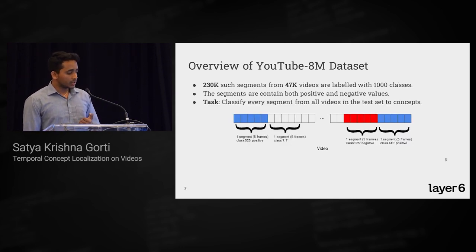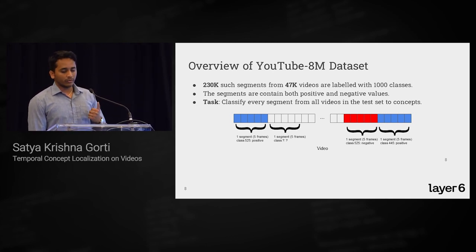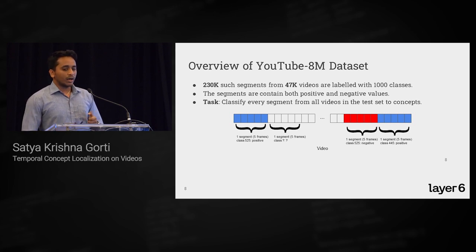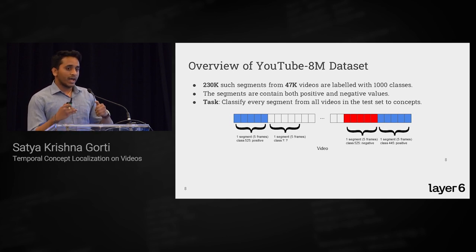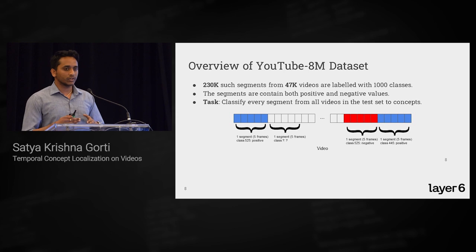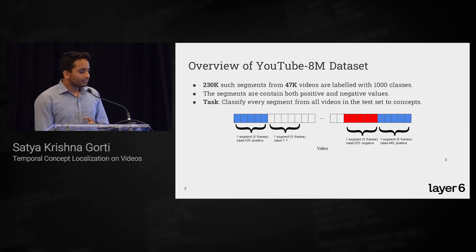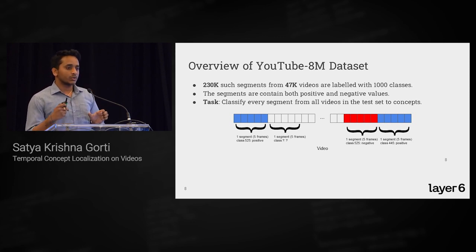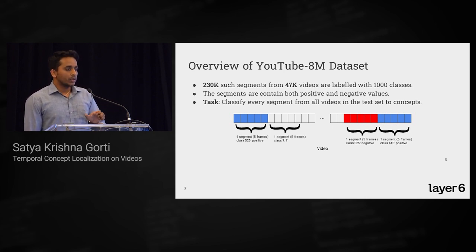Out of 6.1 million videos, about 47,000 — a tiny fraction — have segment-level labels. These include both positive labels, where actions actually occur in the segment, and negative labels, where they don't, with approximately a 50-50 balance. The task of localization is to classify each of these segments into a set of concepts.